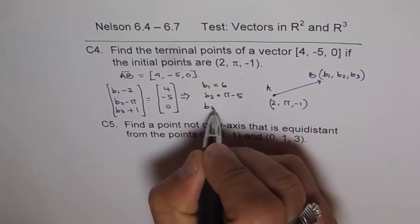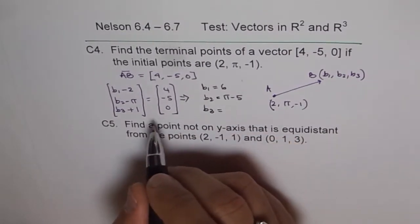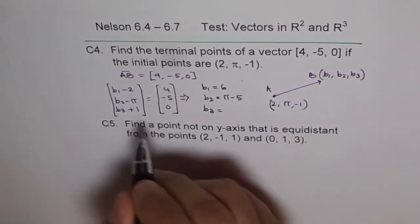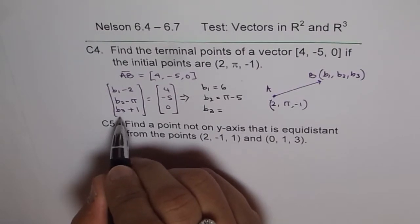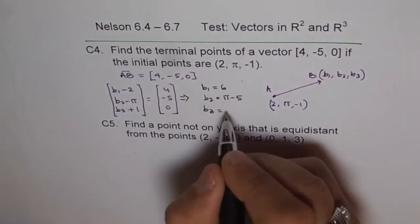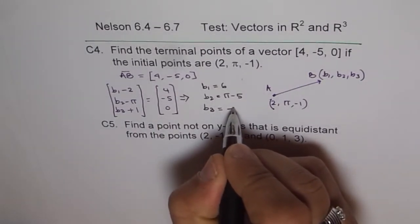And b₃ is equal to, if I want to make this 0, b₃ should be -1, right? b₃ plus 1 should be 0. That means b₃ is -1.